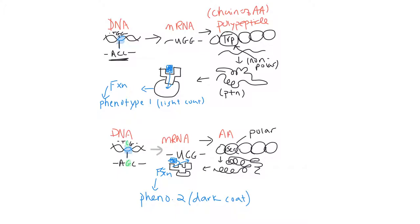Note that there are other cases where the DNA sequence change is in a regulatory region, which can cause more or less protein to be expressed, or the protein to be expressed at a different time during the organism's development. Changing how much and when a gene is turned on and off is a really common way to get different phenotypes. In this example we changed the protein shape itself, but sometimes a mutation results in no protein being formed at all, which could give yet another result.